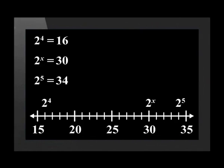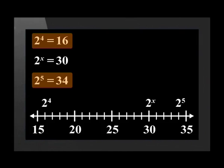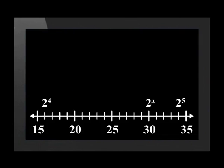Find the powers of 2 that are on either side of 30 in value. 2 to the power of 4 is equal to 16 — this is less than 30. 2 to the power of 5 is equal to 32, and this is more than 30. Let's write this as an inequality: 2 to the power of 4 is less than 30, which is less than 2 to the power of 5. This means that 2 to the power of x lies between 2 to the power of 4 and 2 to the power of 5.